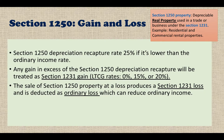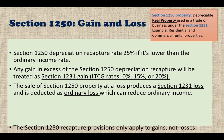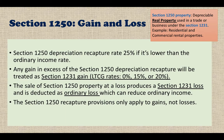The sale of Section 1250 property at a loss produces a Section 1231 loss and is deducted as an ordinary loss, which can reduce ordinary income. The Section 1250 recapture provision only applies to gains, not losses. So a Section 1231 gain is treated as a long-term capital gain, but there's no long-term capital loss in Section 1231 — all losses are treated as ordinary losses.